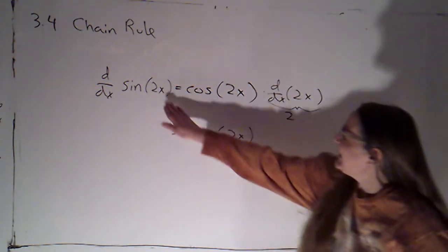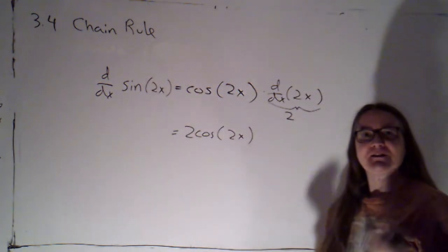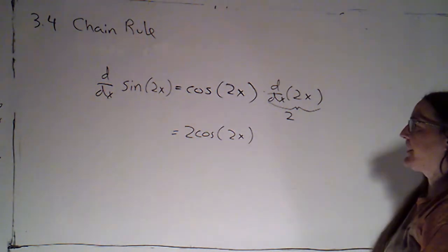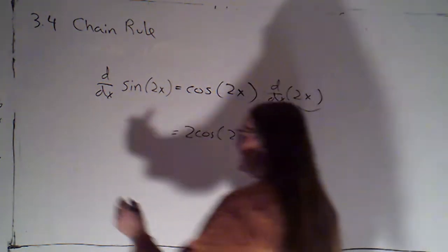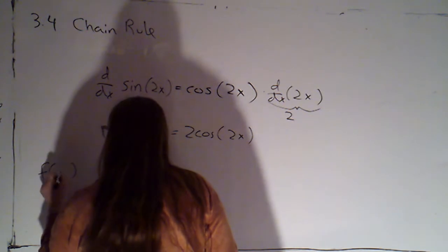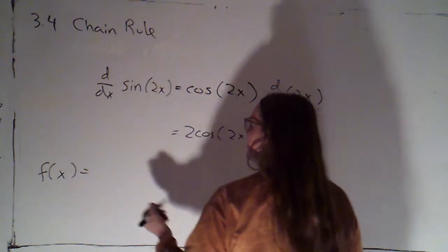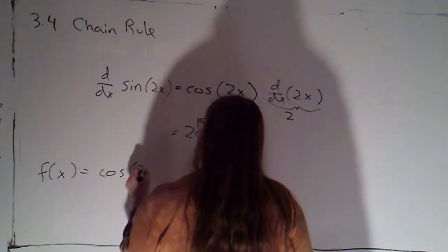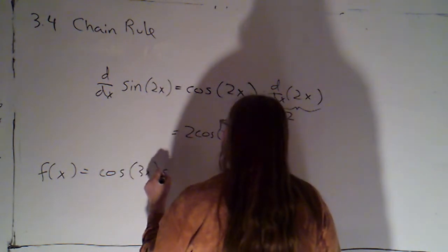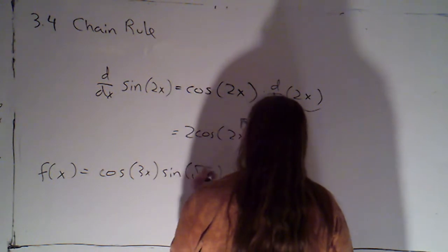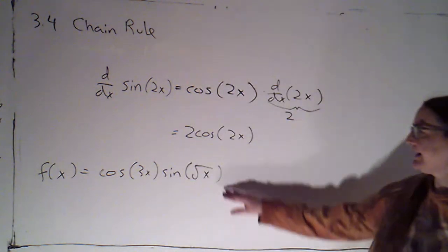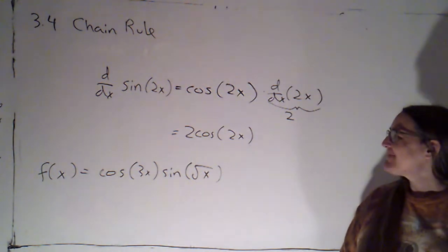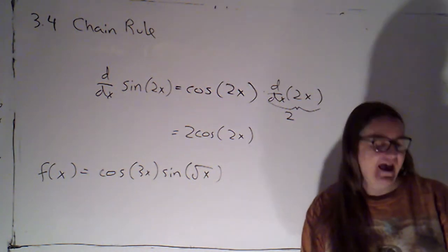But that's something where it looks deceptively simple. And so sometimes people miss that they still need to use the chain rule there. Okay, with that as a caution, I'm going to give you f of x equals cosine of 3x times sine of the square root of x. And I'd like you to find for me the derivative. Okay, pause the video, work that one out.